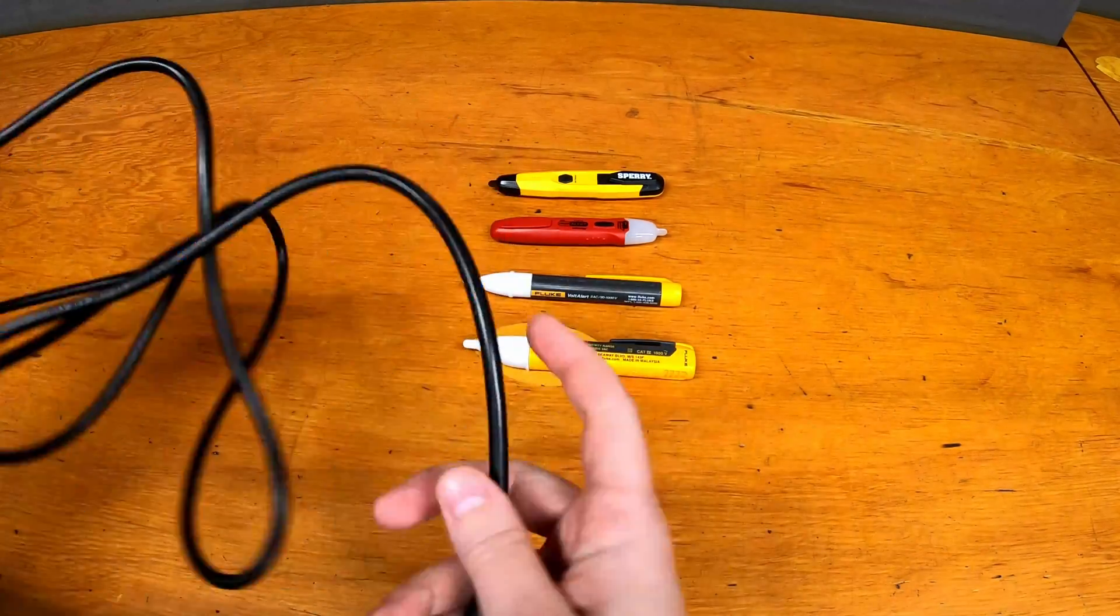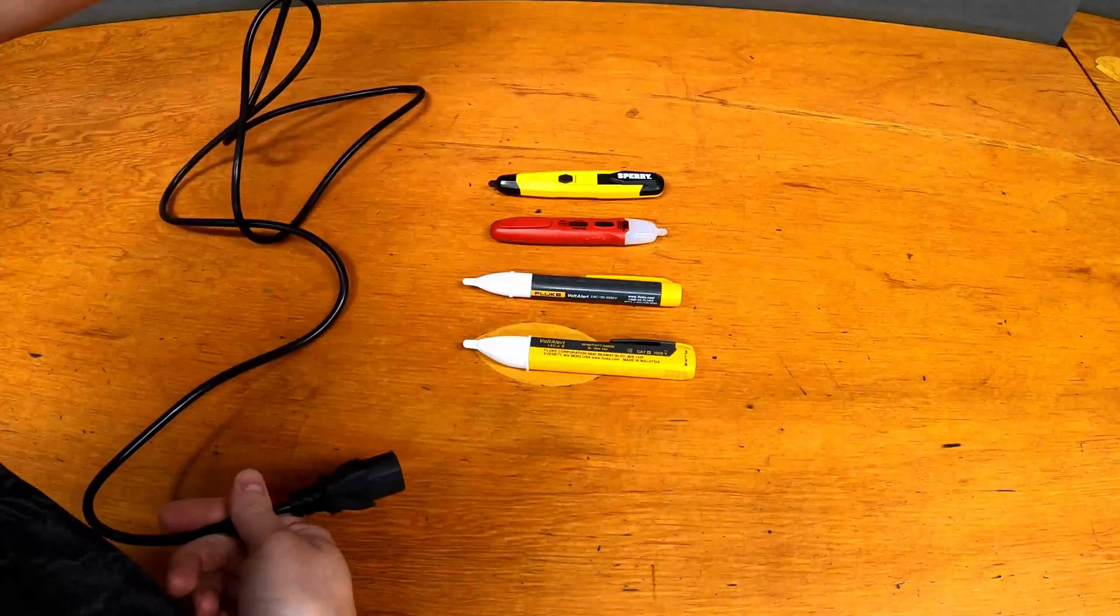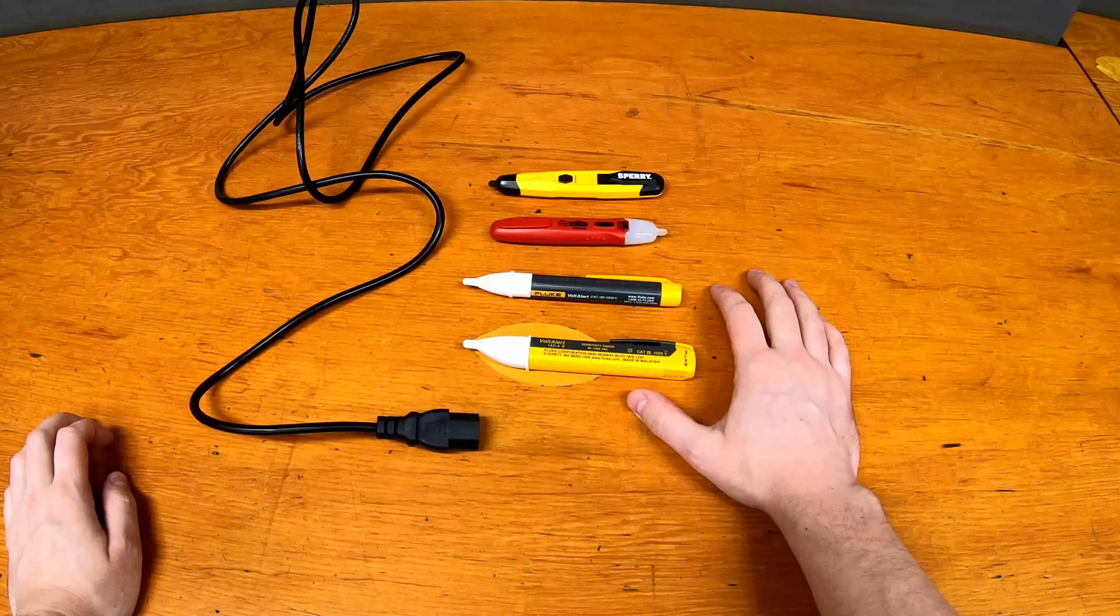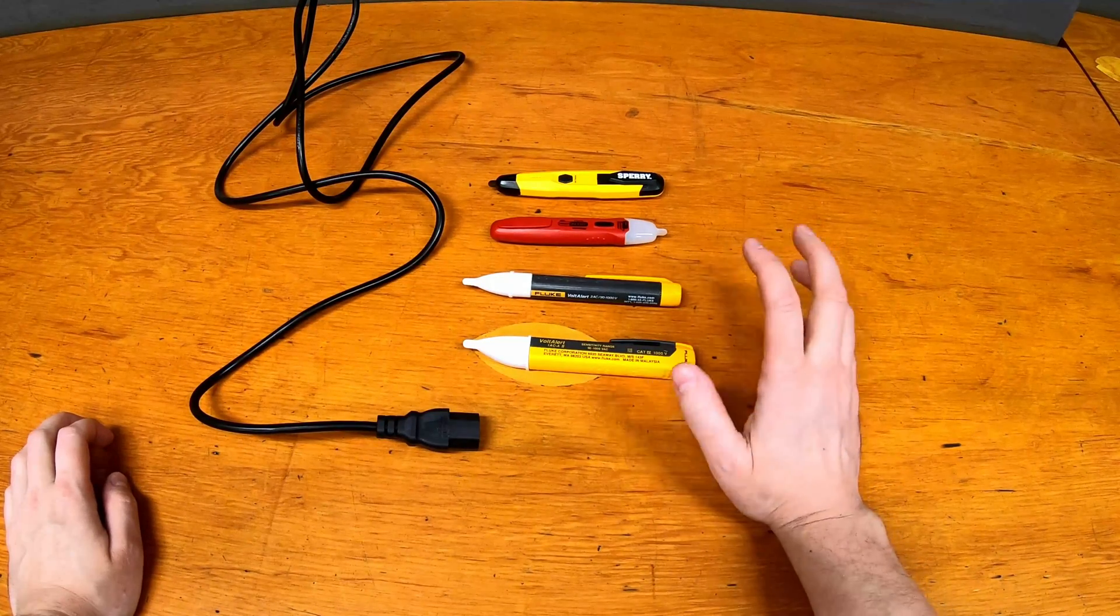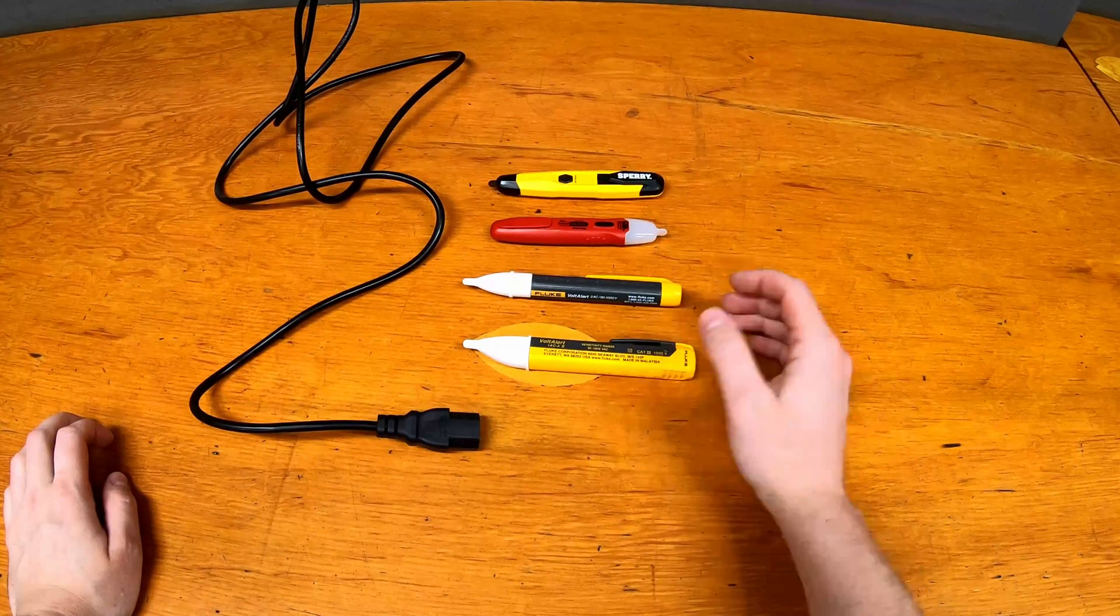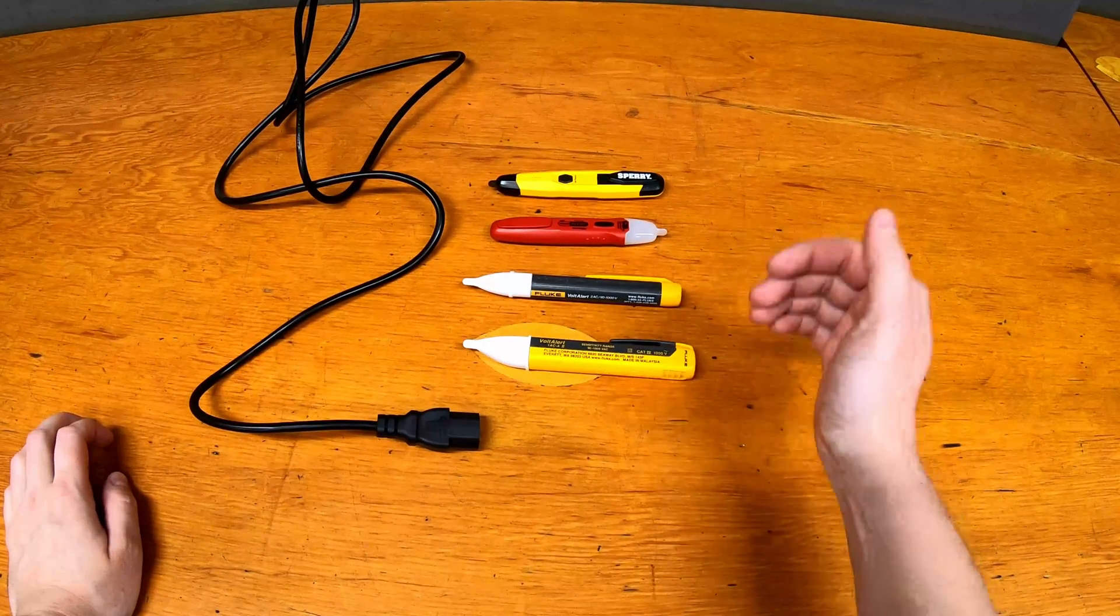All right, and to show you how they work I have a standard IEC power cord here just to extend things out, and we'll start with the flukes. The one thing about the flukes that I've found, and make them useful in some scenarios but not in others, is they need to be very close to the live thing that you're testing to actually activate.